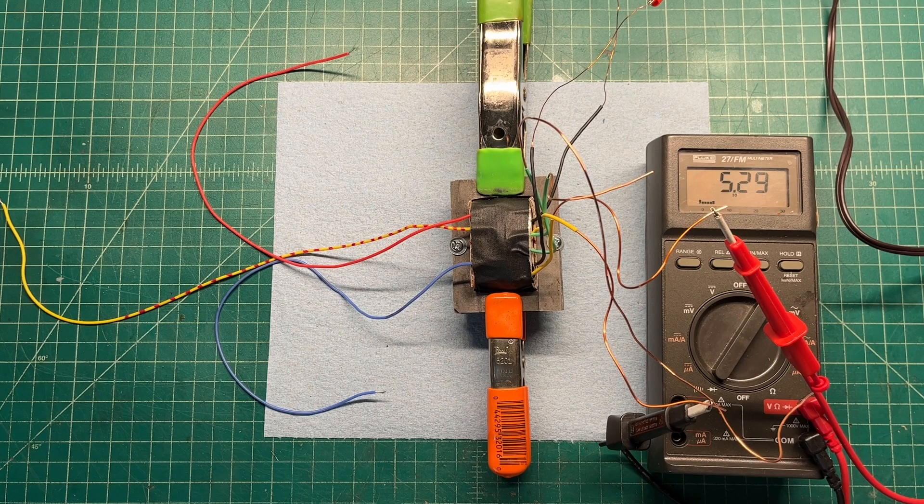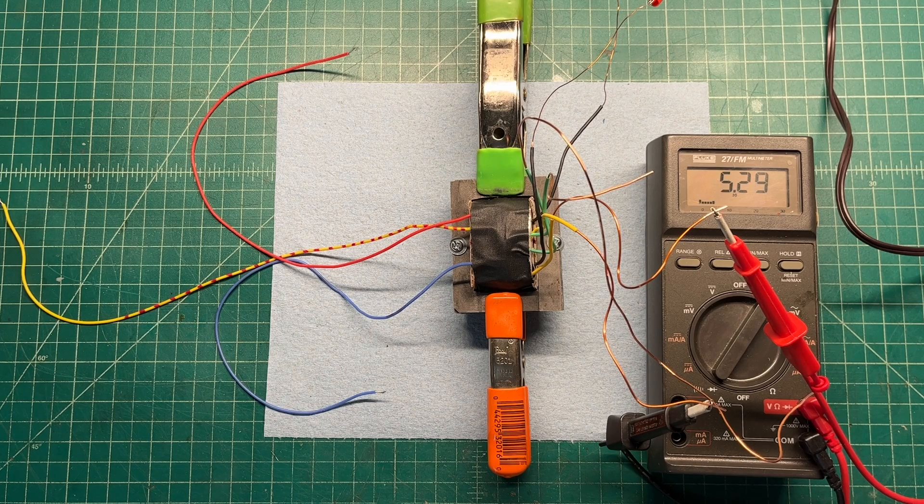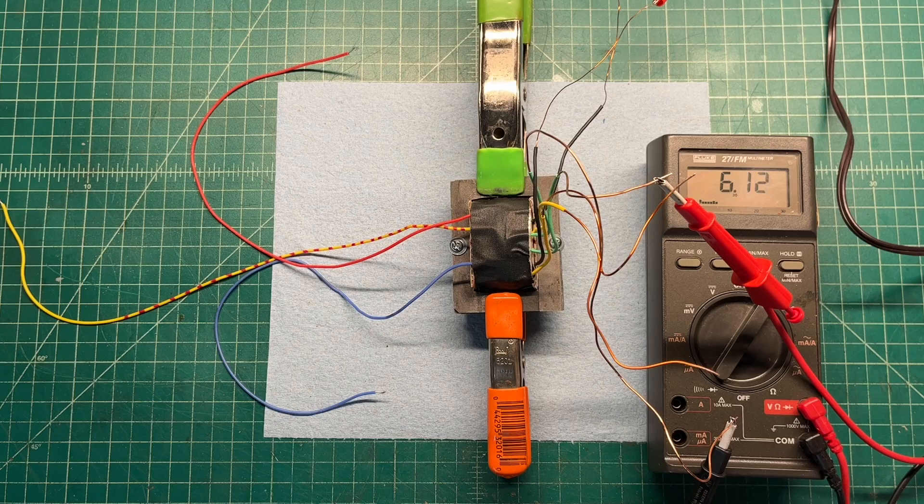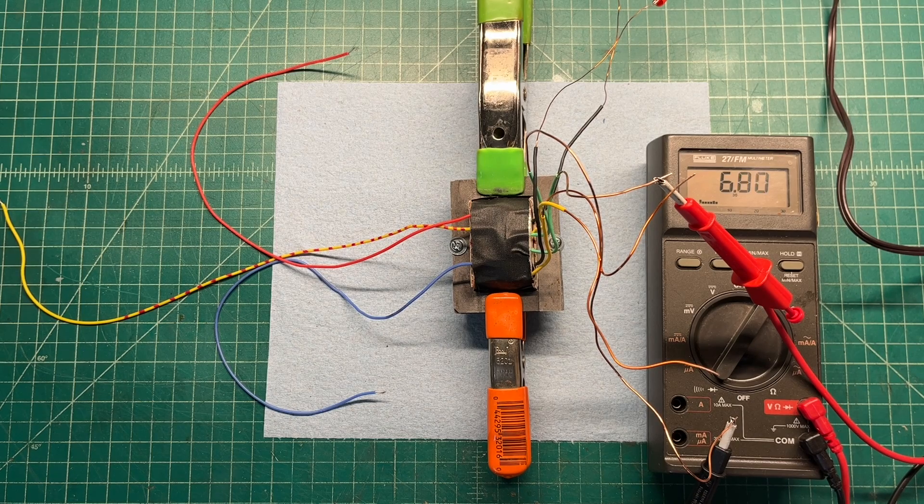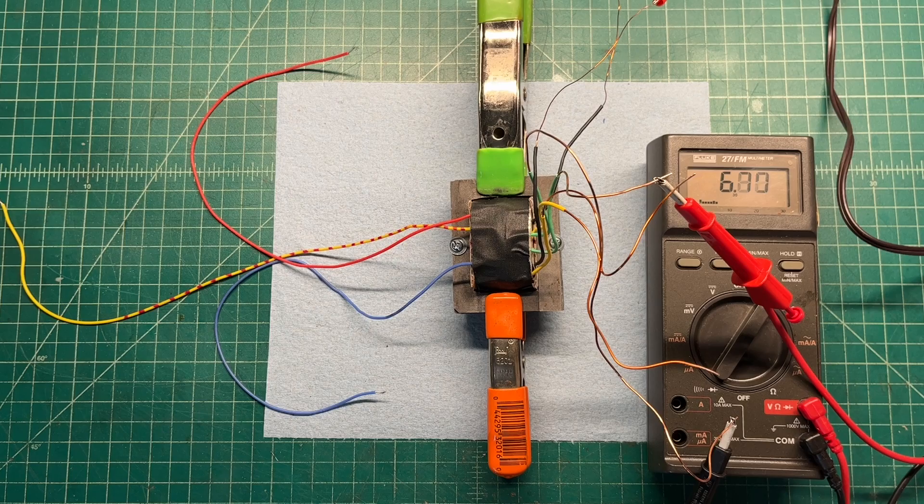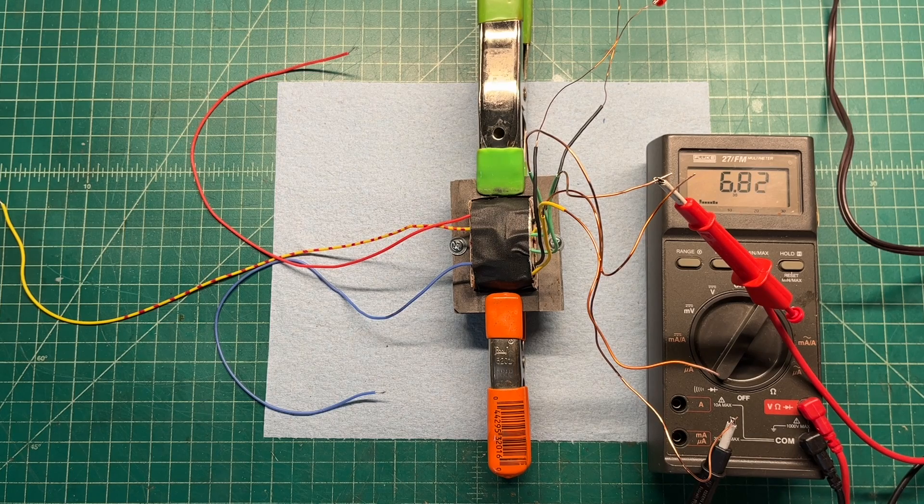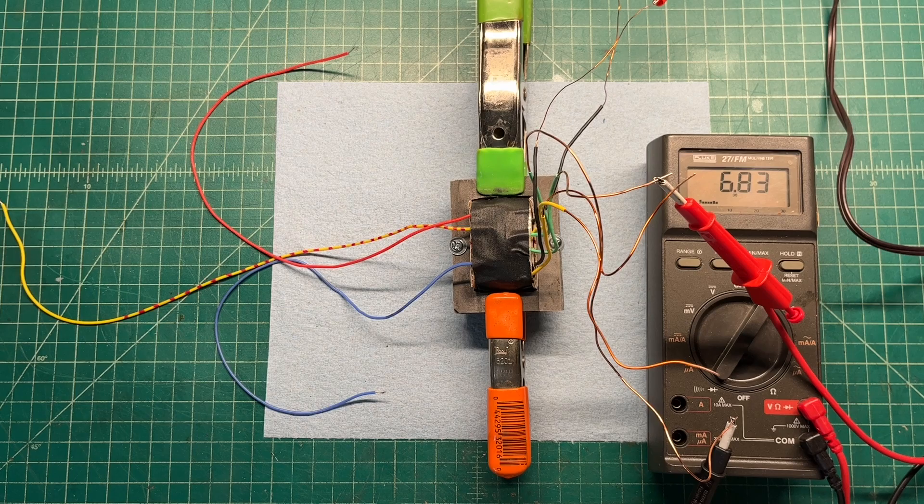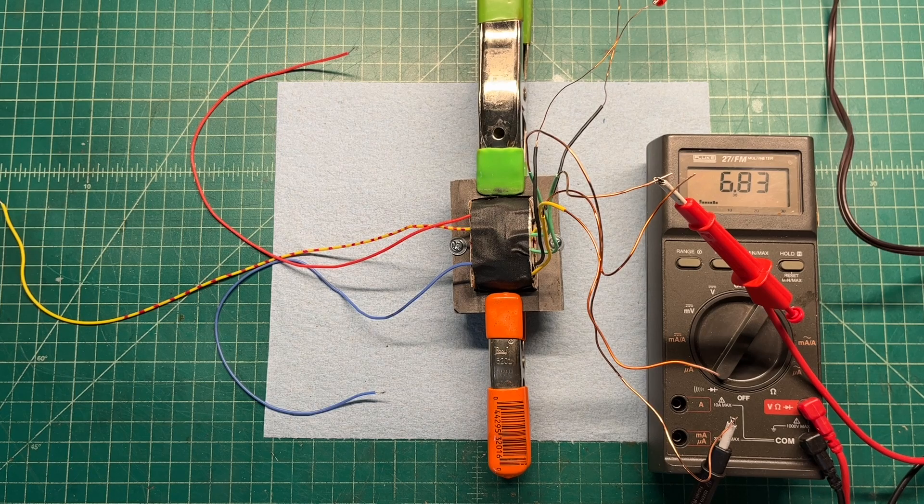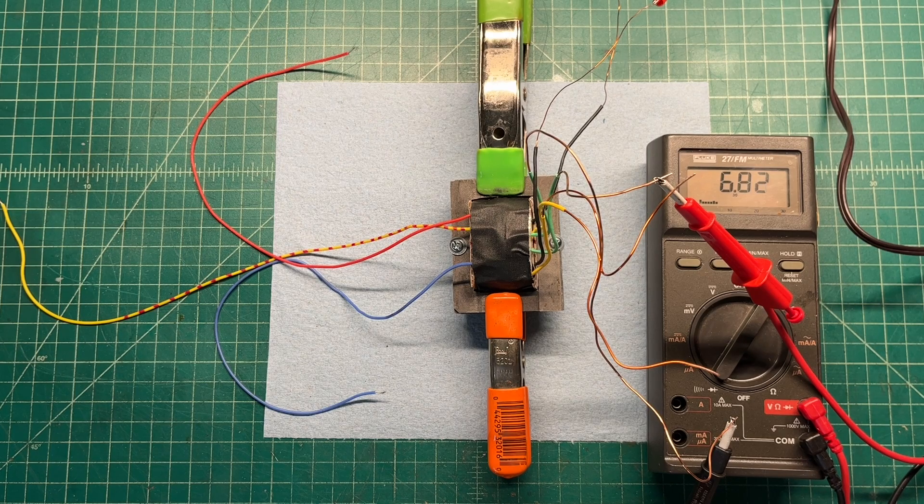Let's look at the 6.3 volt winding. 120.4, 120.5, 6.83 volts.